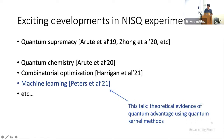So this is indeed what many experimental groups have been doing. In this talk, we will focus on one particular quantum machine learning algorithm called quantum kernel methods, which is implemented in this experiment and many others. And we will show theoretical evidence of quantum advantage using quantum kernel methods.